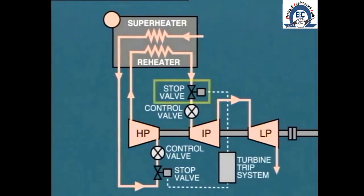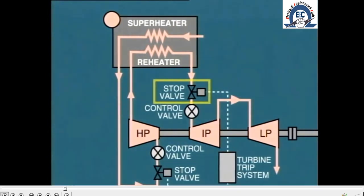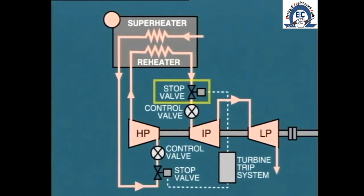So in normal operation, this reheat stop valve is retained in the wide-open position, like the main steam stop valve. If we wish to trip the turbine under any emergency condition, the trip relay is operated and closes both stop valves immediately.